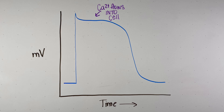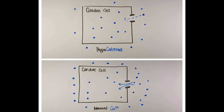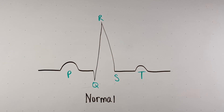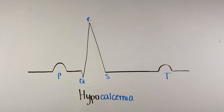In a cardiac action potential, at the top of depolarization, calcium channels open and calcium flows into the cell. If calcium is low outside the cell due to hypocalcemia, calcium cannot flow down its concentration gradient, so it takes longer for calcium to enter — dragging out the plateau phase. Since the plateau phase is the beginning of repolarization and relaxation, it takes longer for the heart to repolarize. The T wave on the EKG represents ventricular repolarization, so this delay results in QT or ST prolongation.